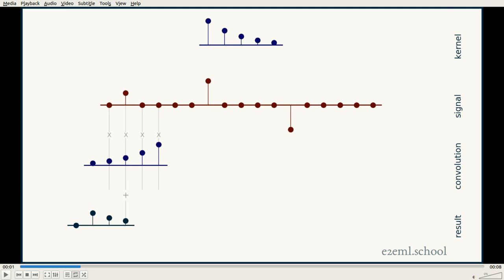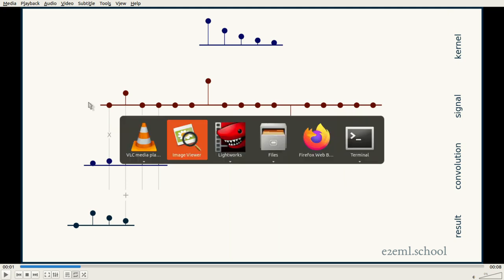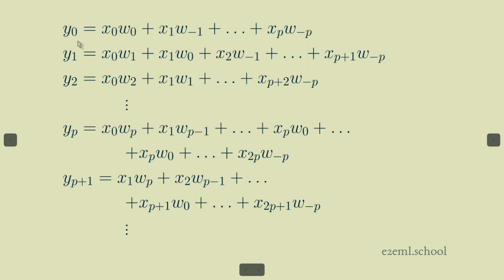And so we can always start with, for y sub zero, we can just start right in the middle of our kernel and say it's x sub zero times w sub zero. And we can count up on our x index, down on our w index, because our kernel's been flipped. X sub one times w minus one, x sub two times w sub minus two, all the way out to x sub p times w sub minus p.